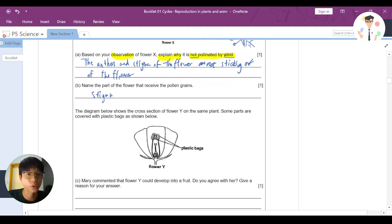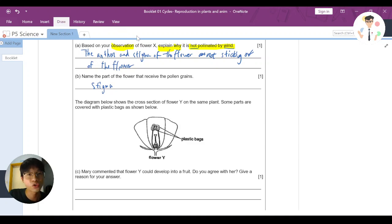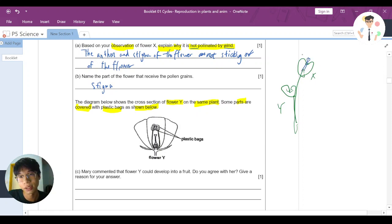Now let's look at the next part of the question. The diagram below shows a cross-section of flower Y on the same plant. Just now we had flower X, now we have flower Y on the same plant. Let me draw the imagination here. This is the flower, this is another flower. What happened in this question is some parts are covered with plastic bags as shown below. This is the stigma. What happened is this flower Y, the inside part is being covered with plastic. Can you see that?